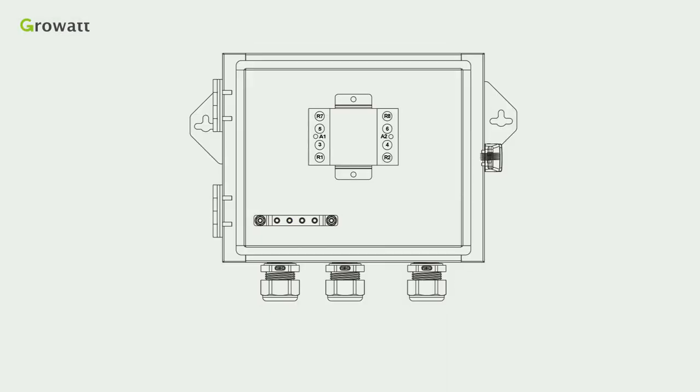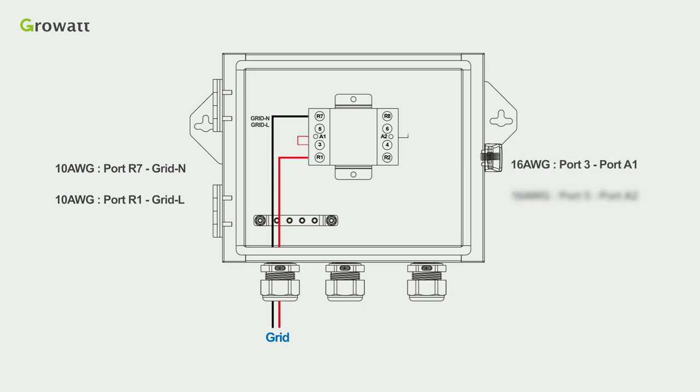Firstly, for grid connection: Use the 10 AWG cables to connect the port R7 from the N line of the grid and connect the port R1 from the L line of the grid. Use one 16 AWG cable to connect the port 3, port A1 and the other 16 AWG cable to connect the port 5, port A2. Connect the grounding cable finally.